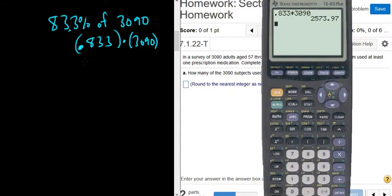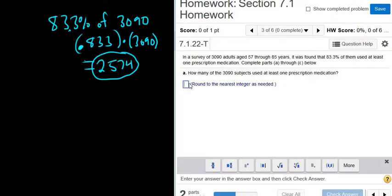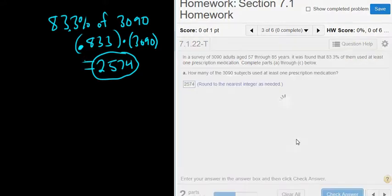It wants us to round to the nearest integer, so that will be a whole number. So 2,574. So the answer is 2,574.